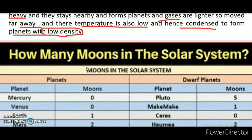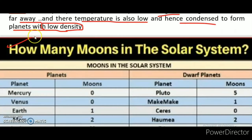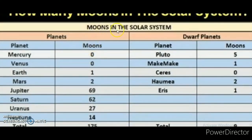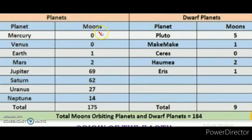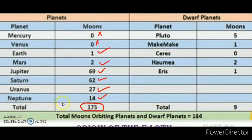How many moons are in the solar system is an important exam topic. Mercury has no moon, Venus has zero moons, Earth has one moon, Mars has two, Jupiter has 69, Saturn has 62, Uranus has 27, Neptune has 14 — a total of 175 moons. The question of which planet has the maximum moons often appears in exams, and the answer is Jupiter.